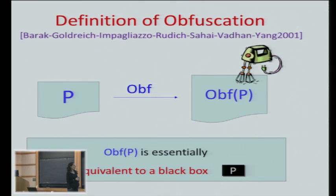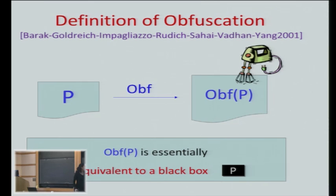So what's the state of the art? In the theoretical community, this problem started getting attention in a seminal work by Barak et al. from 2001. They were the first people to consider this problem theoretically, and they gave a definition. Obfuscation should be an efficient polynomial-time algorithm with the same input-output behavior. The security guarantee — mostly speaking — is that whatever an adversary can learn from the code, whatever property he can learn, he can also learn just by running the code — with black-box access to the code. Black-box access just means you can run the code, but do nothing more.